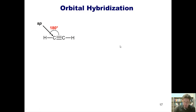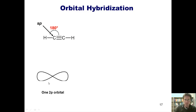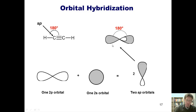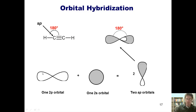Now let's do the same process for an sp hybridized molecule, which has a 180 degree bond angle. The fact that these carbon atoms are sp hybridized implies they've used one s orbital and one p orbital, and left the other two p orbitals unused in the hybridization. We combine one 2p orbital with the one 2s orbital to form two sp orbitals. When these sp orbitals are placed on the carbon atom they form a nice 180 degree linear angle. The two unused 2p orbitals go perpendicular to that plane, 90 degrees apart from each other.